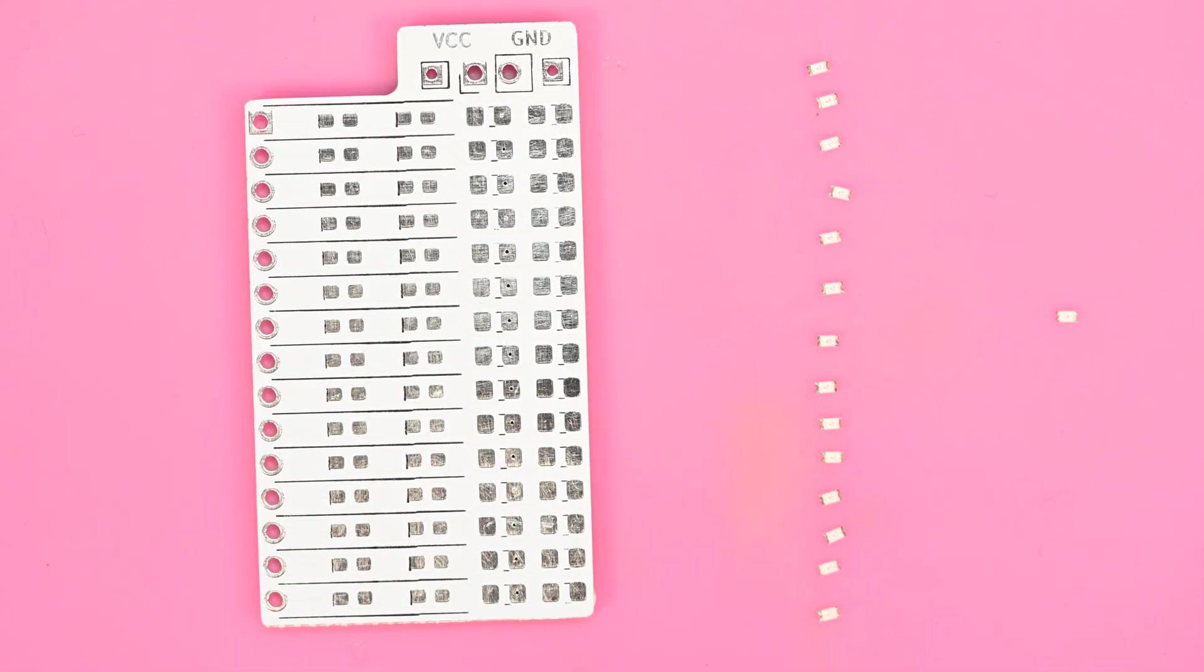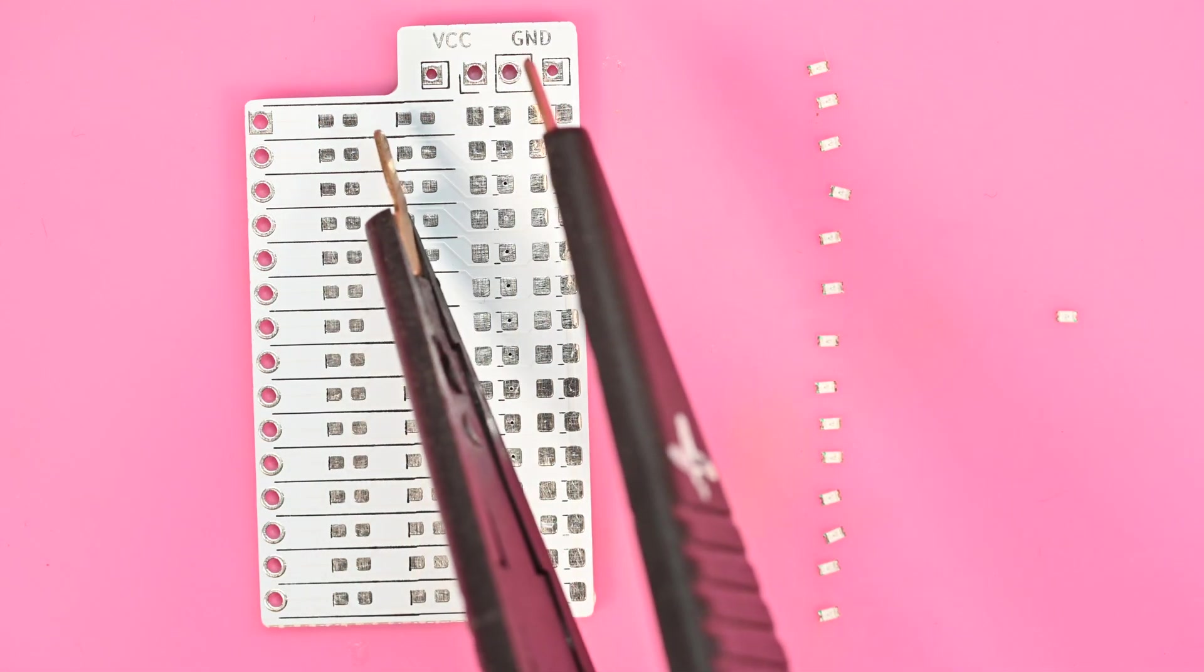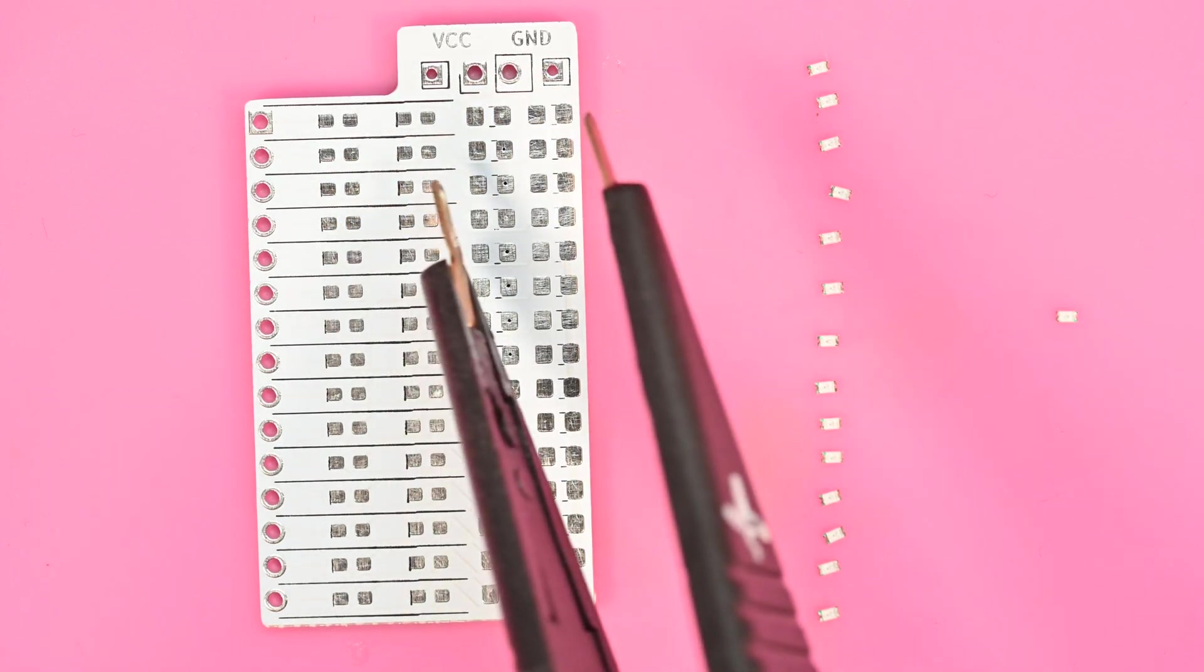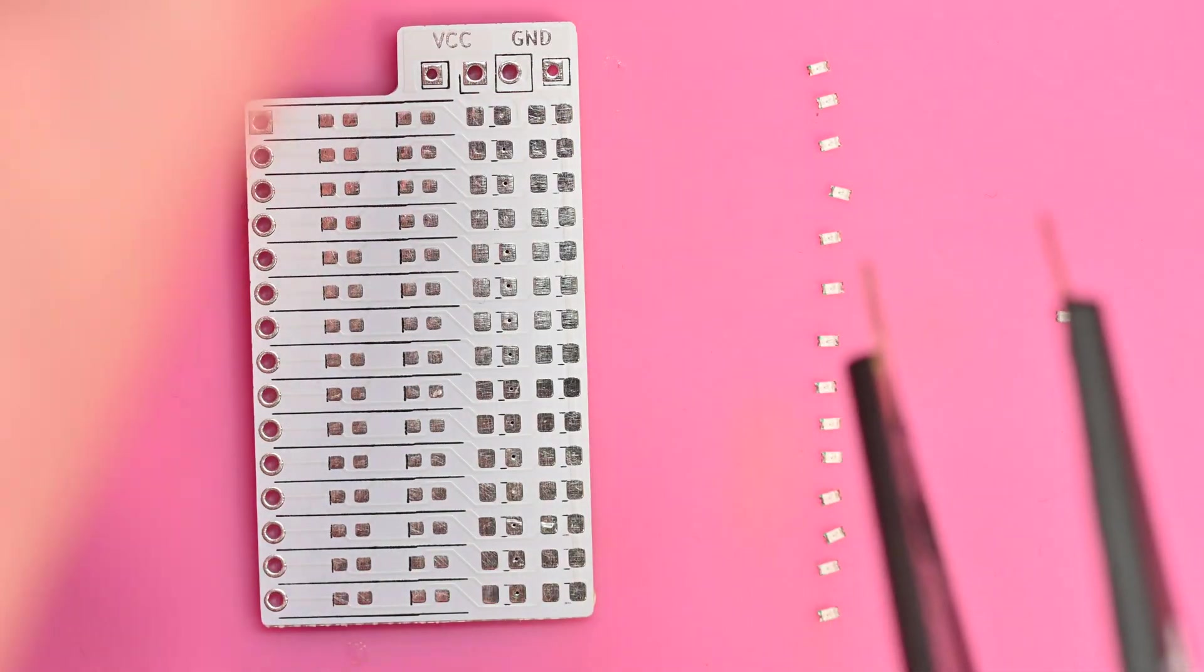First and foremost, I always keep the board in a certain orientation. The cathode of the LED goes over to your left, and so I keep the board in this orientation until at least the LEDs are tacked on.